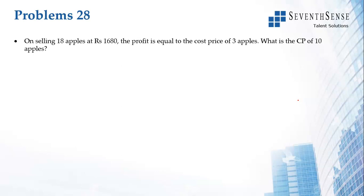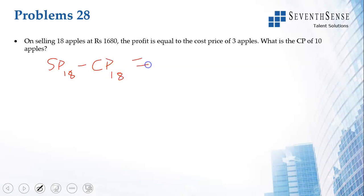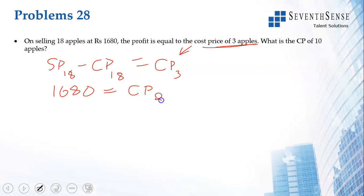Next problem: on selling 18 apples at 1680 rupees, profit is equal to the cost price of 3 apples. We frame the equation: selling price of 18 apples minus cost price of 18 apples equals profit, which equals cost price of 3 apples. So SP of 18 apples = CP of 18 apples + CP of 3 apples = CP of 21 apples. Taking cost price of 1 apple as x, we get 1680 = 21x.